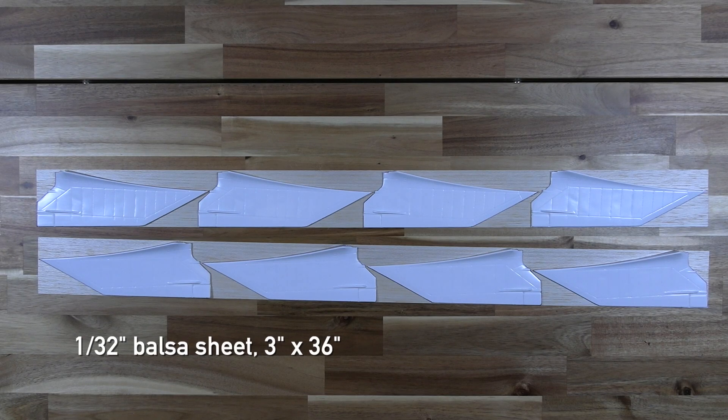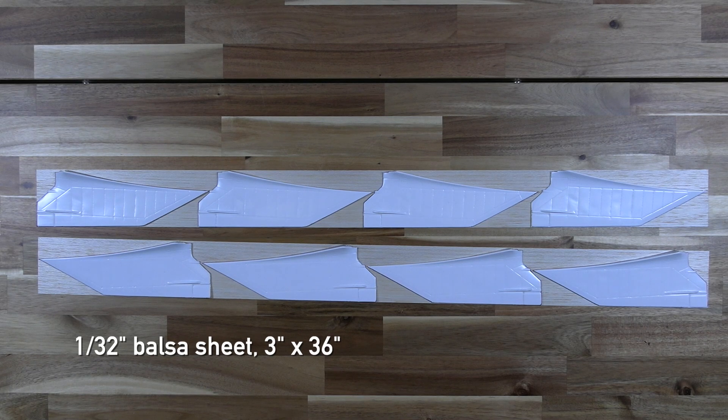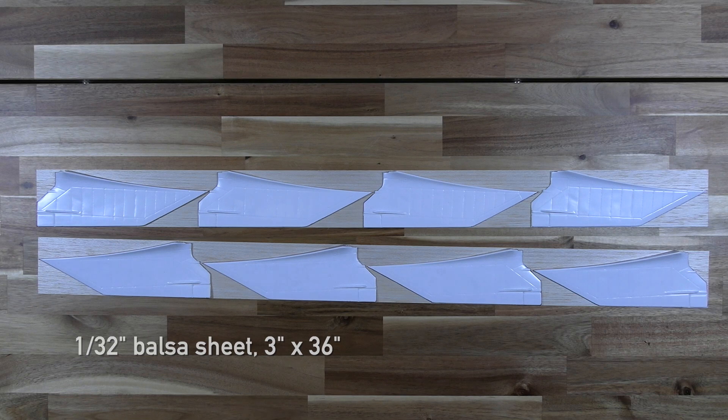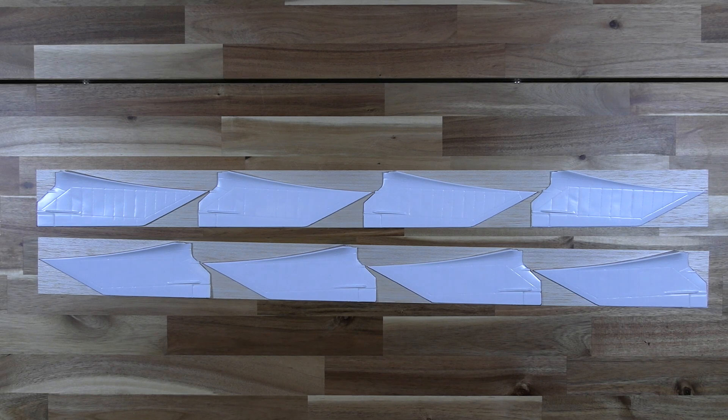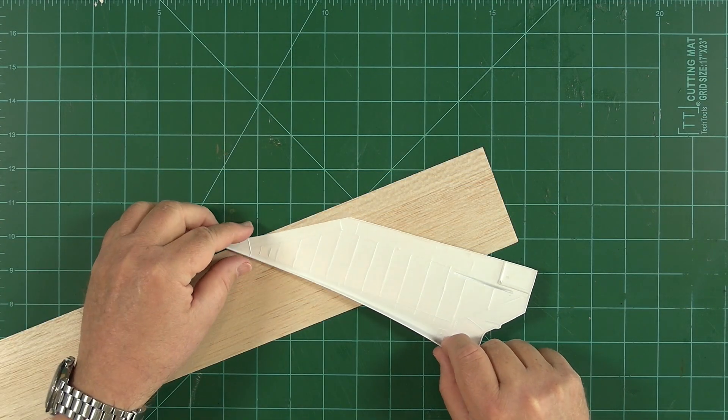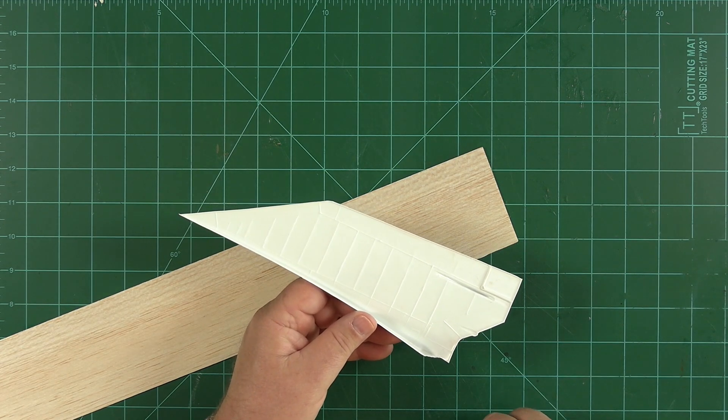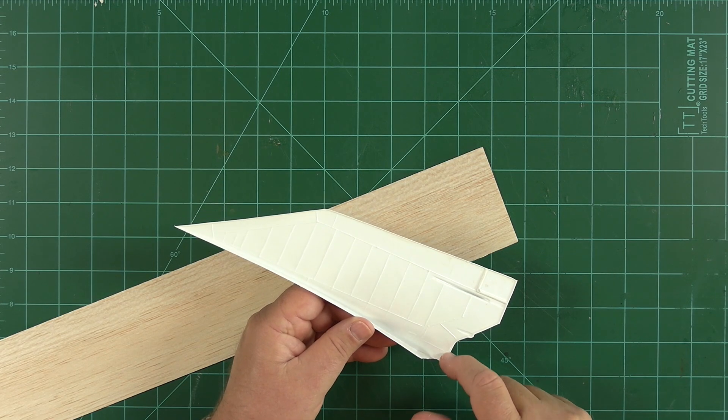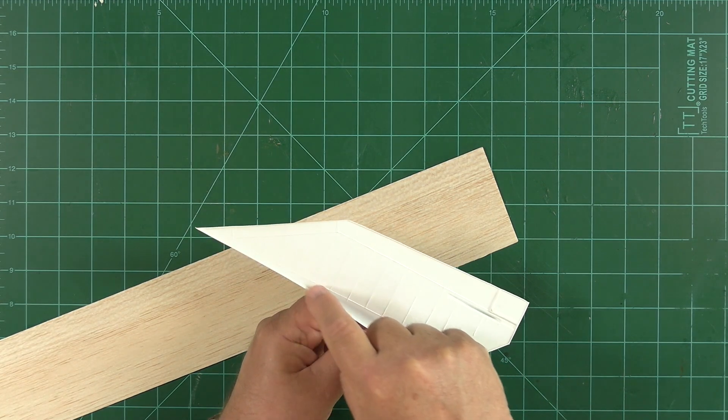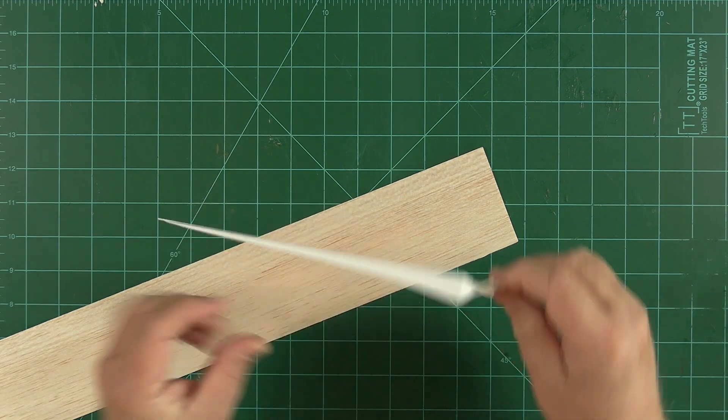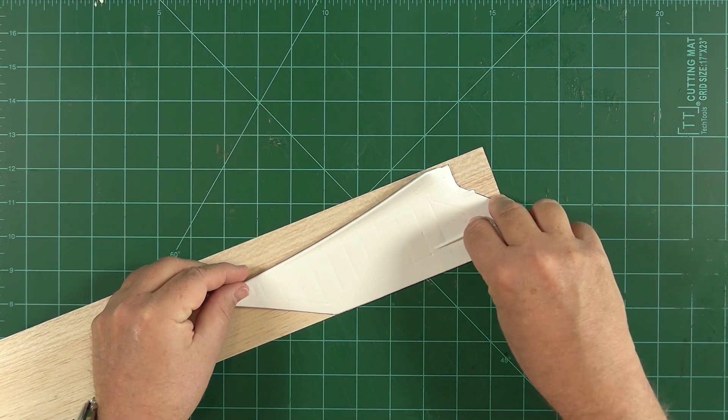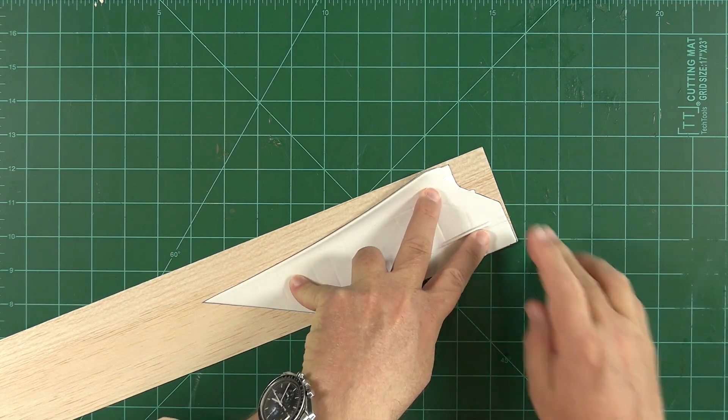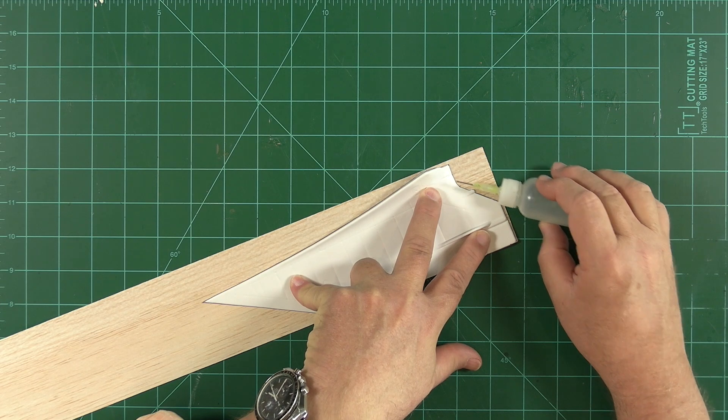All eight of our fin halves are cut, and I've laid them out on a pair of 3 inch by 36 inch, 1/32 inch thick balsa. This is just to show you that it is possible to get all eight fin halves onto two sheets of this material. Let's attach our first plastic part to the balsa backing. The process is going to be very simple. We're going to use medium CA glue and run a bead of that material all the way around the outside edge of the interior of the plastic part. We'll then position it onto the 1/32 inch thick balsa and then gently hit that with some accelerator.